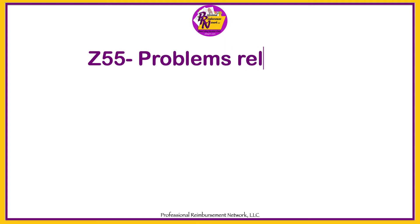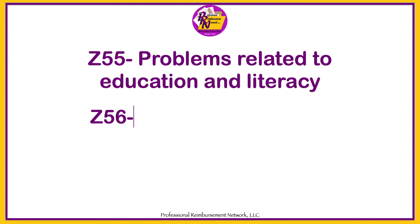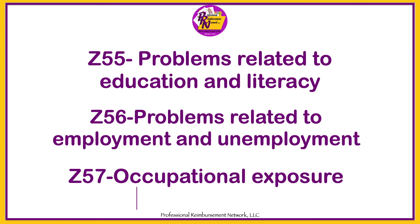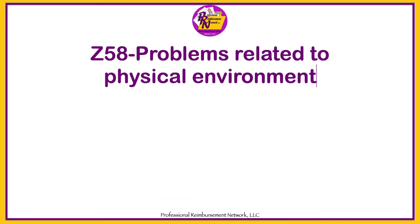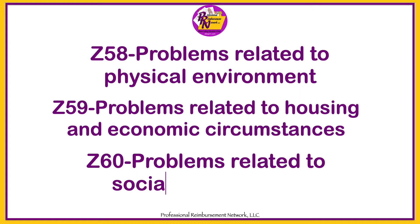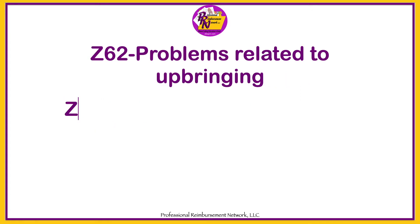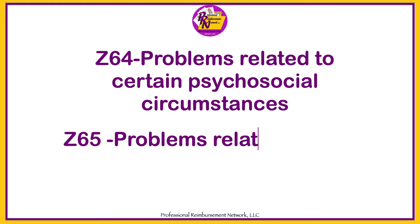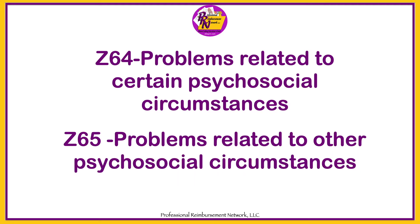The SDOH Z-code categories include: Z55 — problems related to education and literacy; Z56 — problems related to employment and unemployment; Z57 — occupational exposure to risk factors; Z58 — problems related to physical environments; Z59 — problems related to housing and economic circumstances; Z60 — problems related to social environment; Z62 — problems related to upbringing; Z63 — other problems related to primary support group including family circumstances; Z64 — problems related to certain psychosocial circumstances; and Z65 — problems related to other psychosocial circumstances.